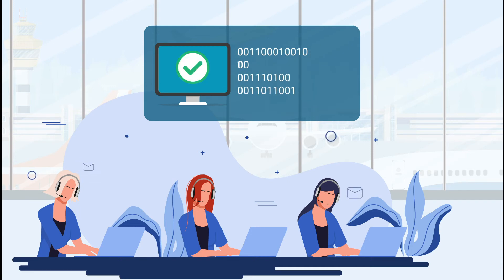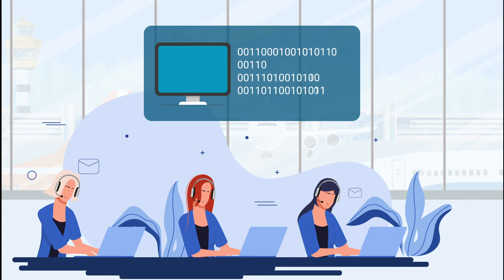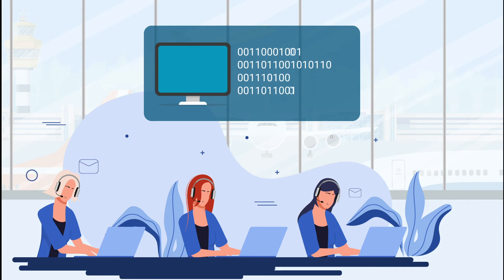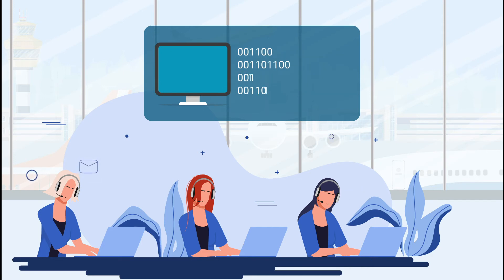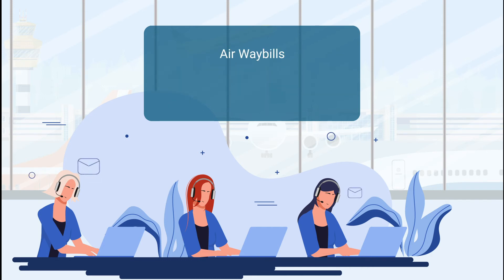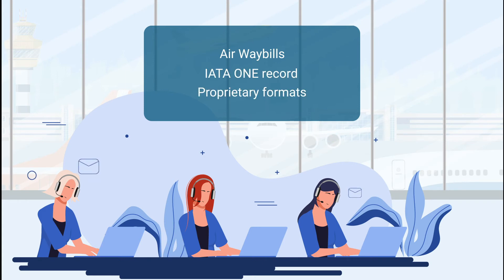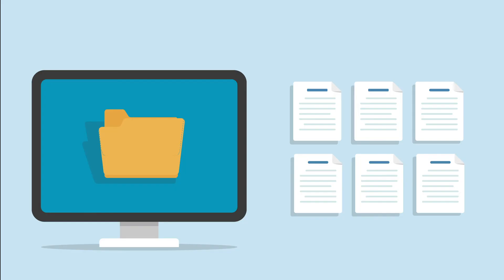The solution can check cargo shipments as well as passenger itineraries and is scalable regarding the number of checks it can perform. Compliance check requests can be submitted as airway bills, IATA 1 record, or proprietary formats via several channels. After receiving the compliance check request, ITTS will process the request in several steps.